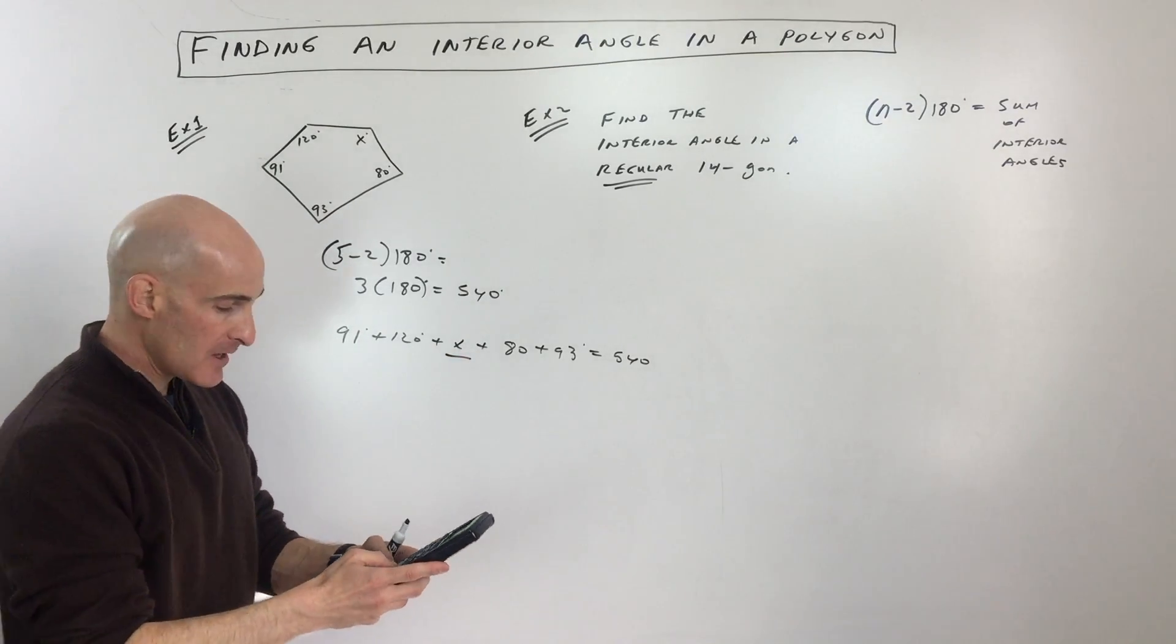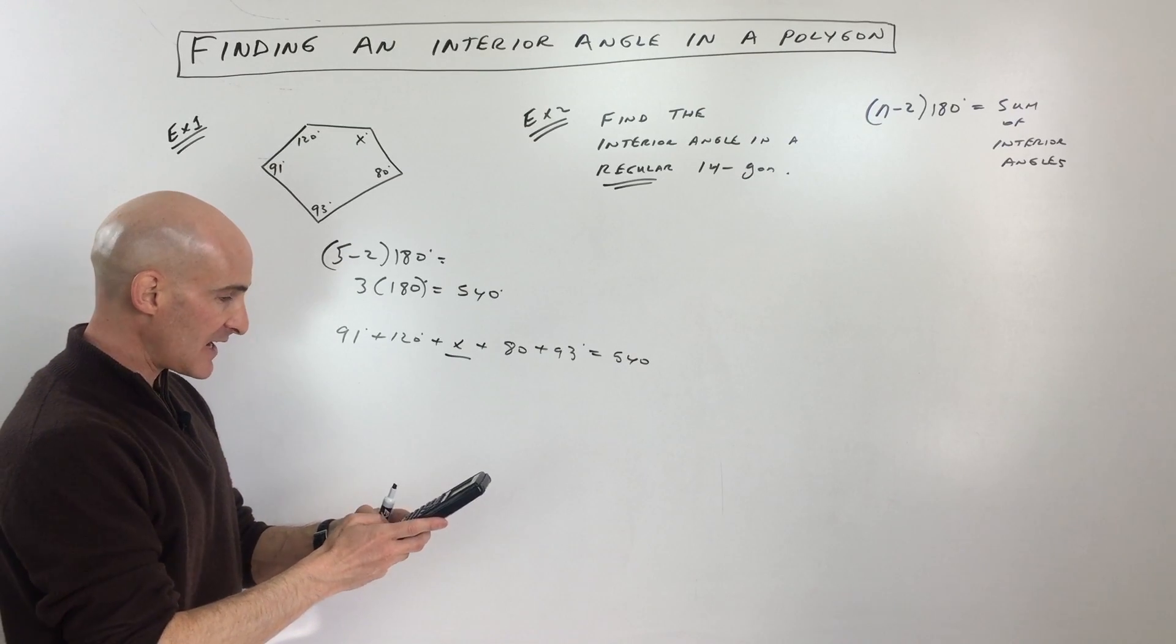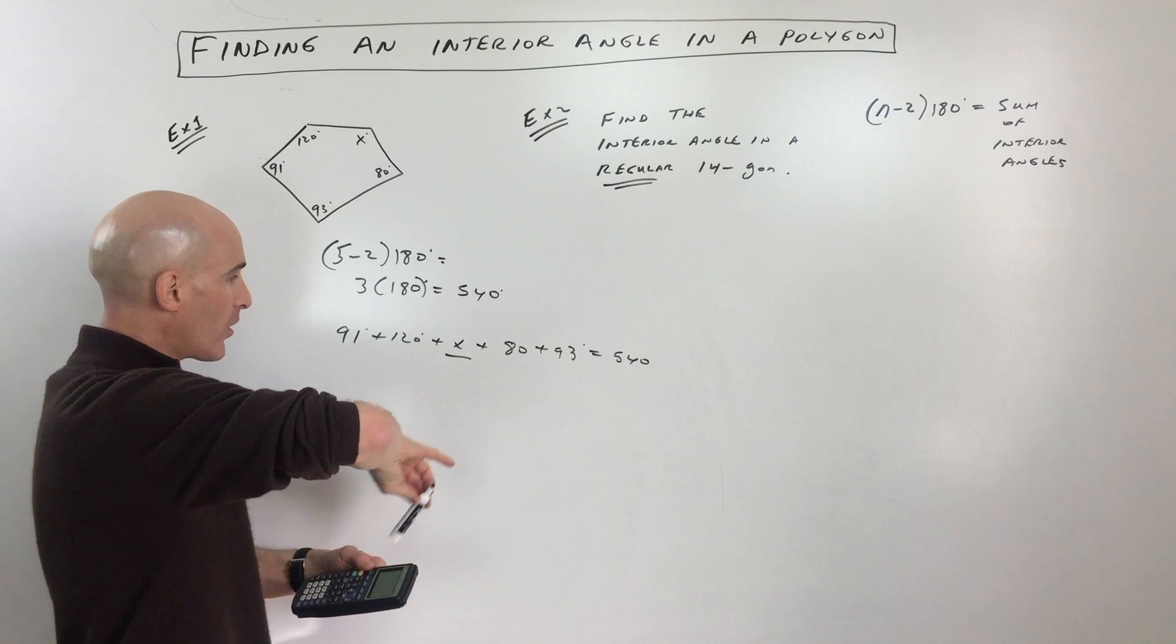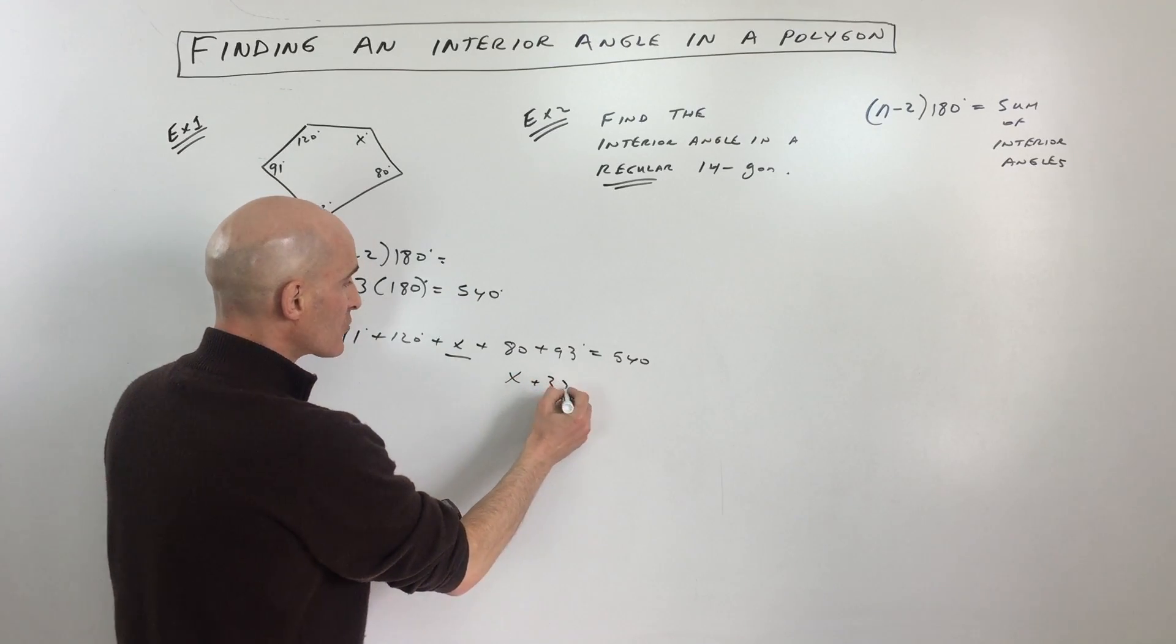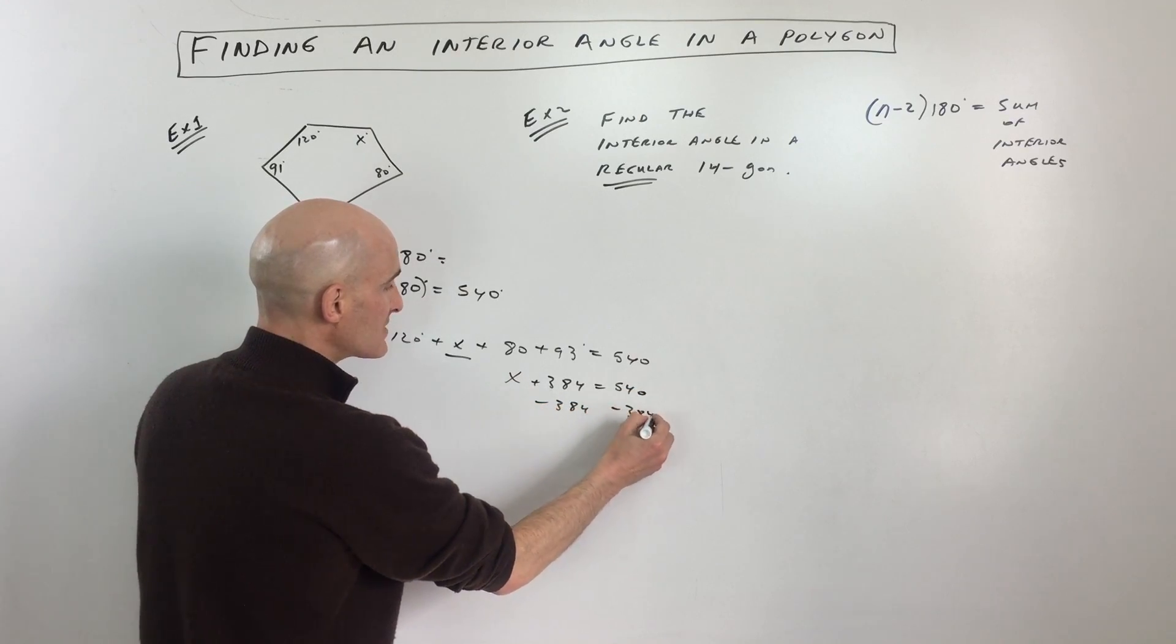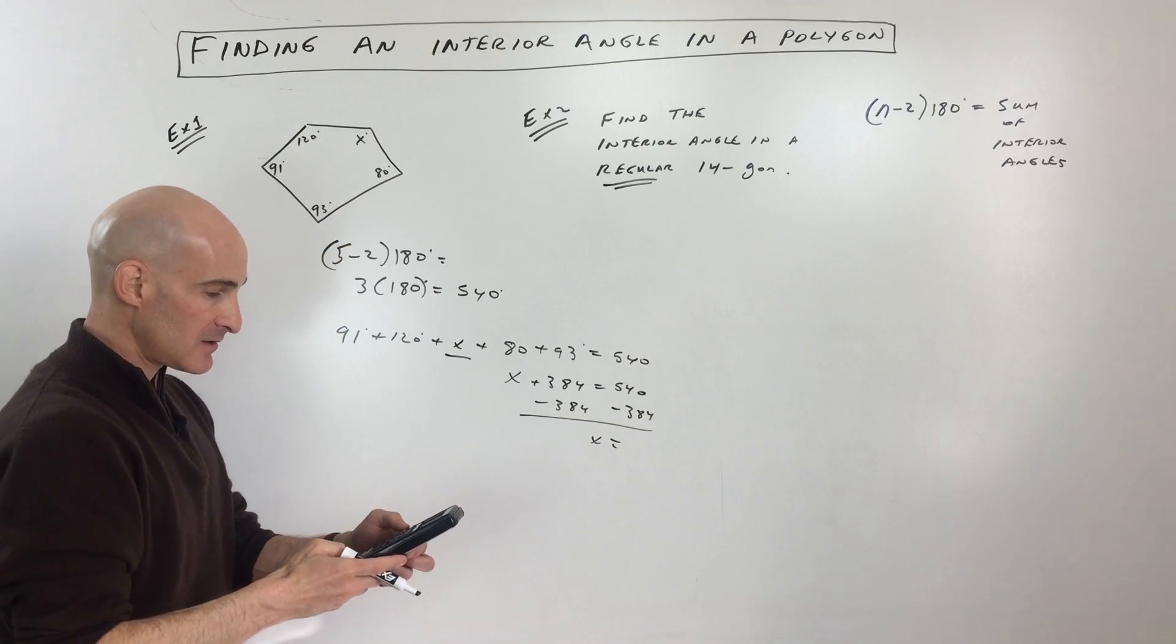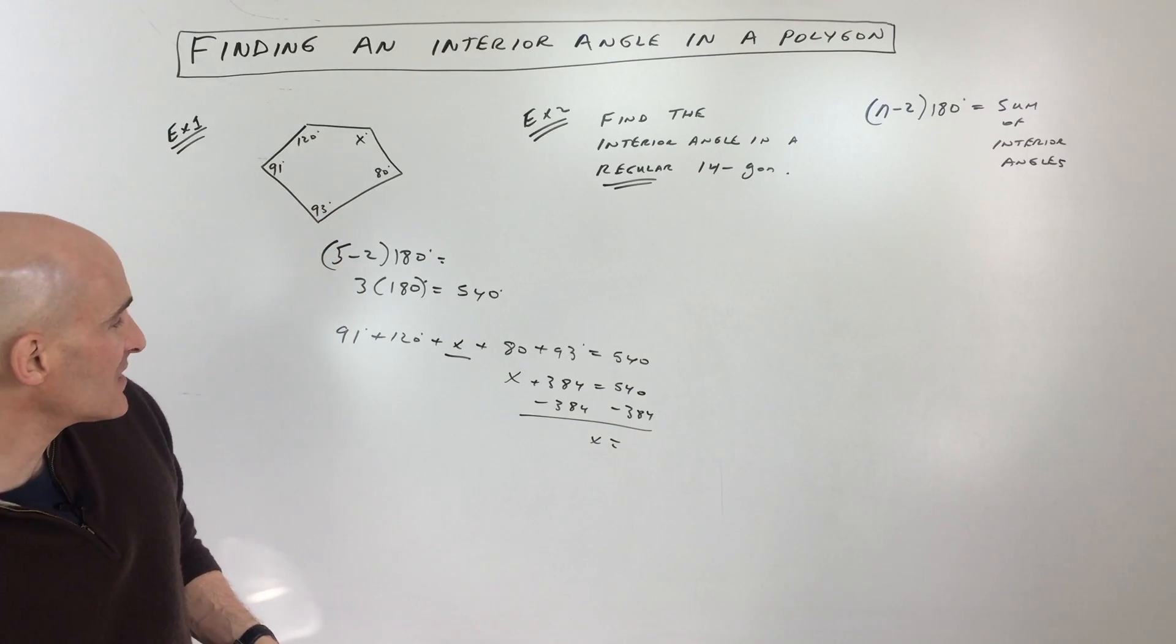So let's go to the calculator, 91 plus 120 plus 80 plus 93, that comes out to 384. So we have x plus 384 equals 540. Just subtract the 384 from both sides, and we've got it. So 540 minus, looks like 156 degrees.